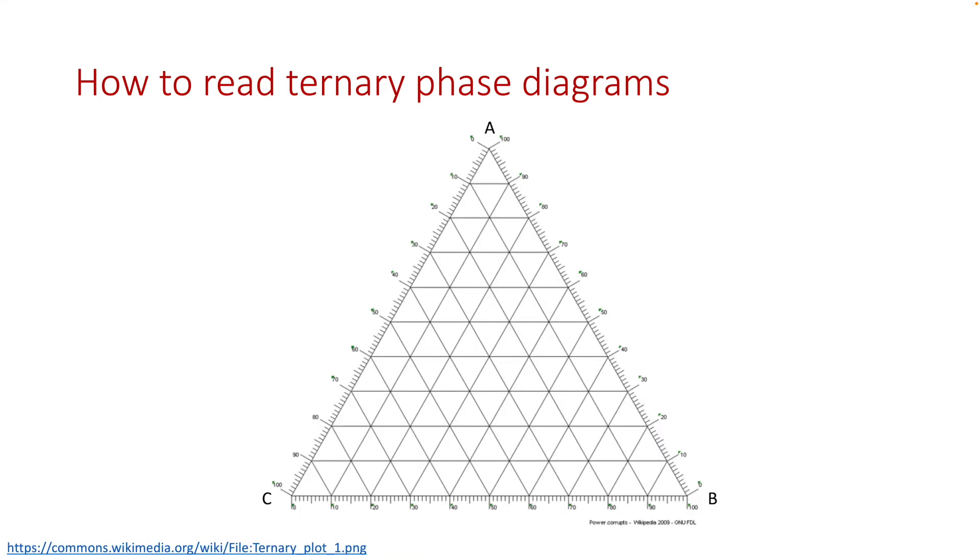The second thing we like to do is to read off the composition from the ternary phase diagram. For example, we have a composition that lies on the point where it is marked by the blue dot. To get the A content, all you have to do is to draw a line that is parallel to BC, and you can read off that's 50%. You don't have to only go to the right-hand side, if you read from the left-hand side, it's also 50%.